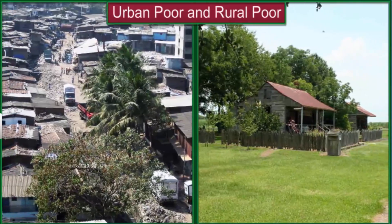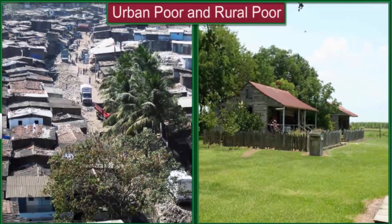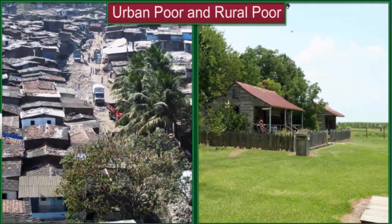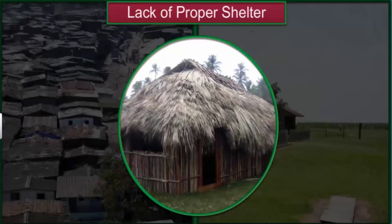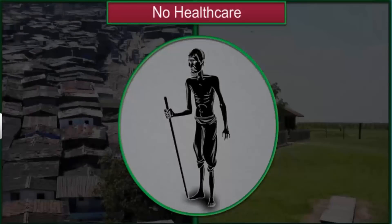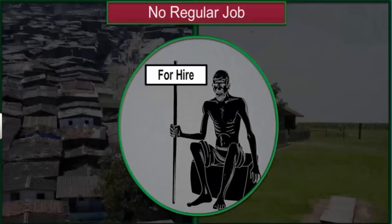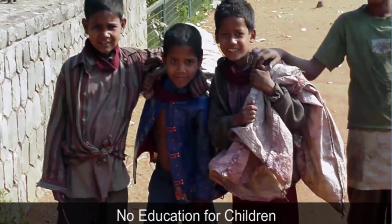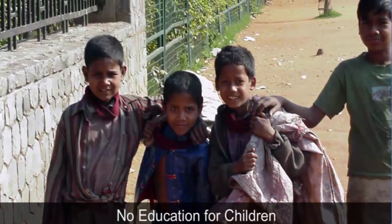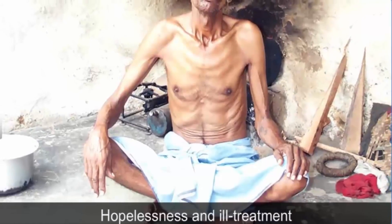There are certain things that are common in the life of poor people in urban and rural India. These include hunger and malnutrition, lack of proper housing and shelter, inability to get health care in case of illness, no regular job and income, lack of sanitation and safe drinking water, no education for children who often work as child laborers, and hopelessness about life with ill treatment from others who are better off.